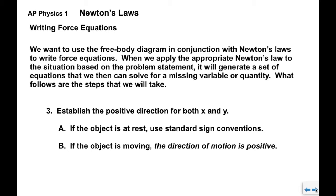Step three, we're going to establish the positive direction for both x and y. If the object is at rest, we use standard sign conventions. If the object is not moving, we fall back on standard sign conventions: right is positive, left is negative, up is positive, down is negative. If the object is moving, the direction of motion is positive. This will be going against our standard sign conventions in the event that the object happens to be moving to the left or down.